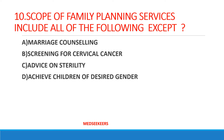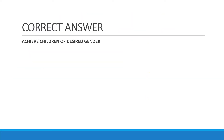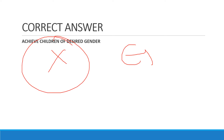Scope of family planning services includes all of the following EXCEPT — option A: marriage counseling; option B: screening for cervical cancer; option C: advice on sterility; option D: achieve children of desired gender. Your answer should be option D — achieve children of desired gender. The national family health program focuses on marriage counseling, advice on sterility, and contraceptive methods, but never on achieving children of desired gender.